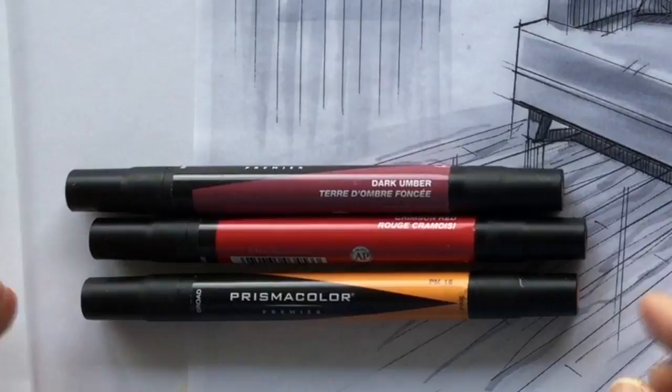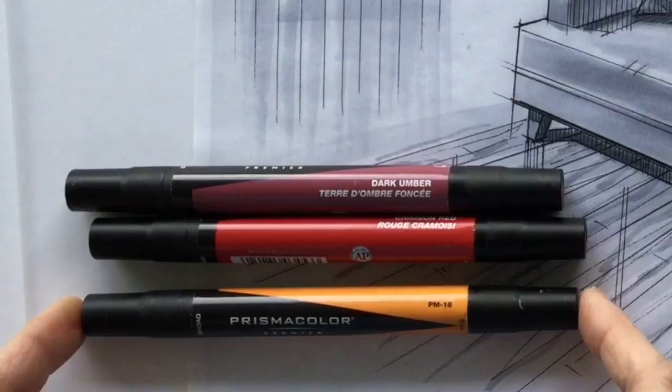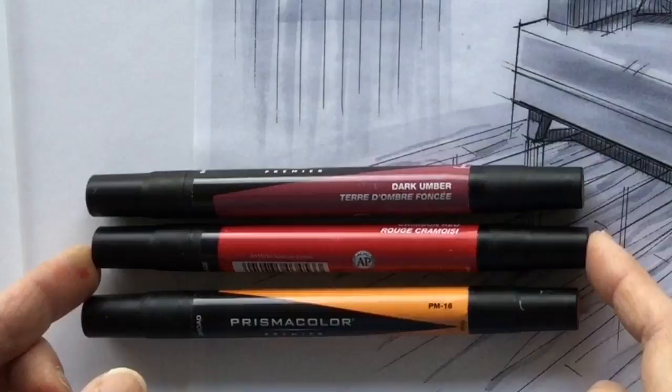Now, I've given myself the best chance I can by using orange, which is a lighter version of this crimson red, and dark umber, which is a darker version of the red.